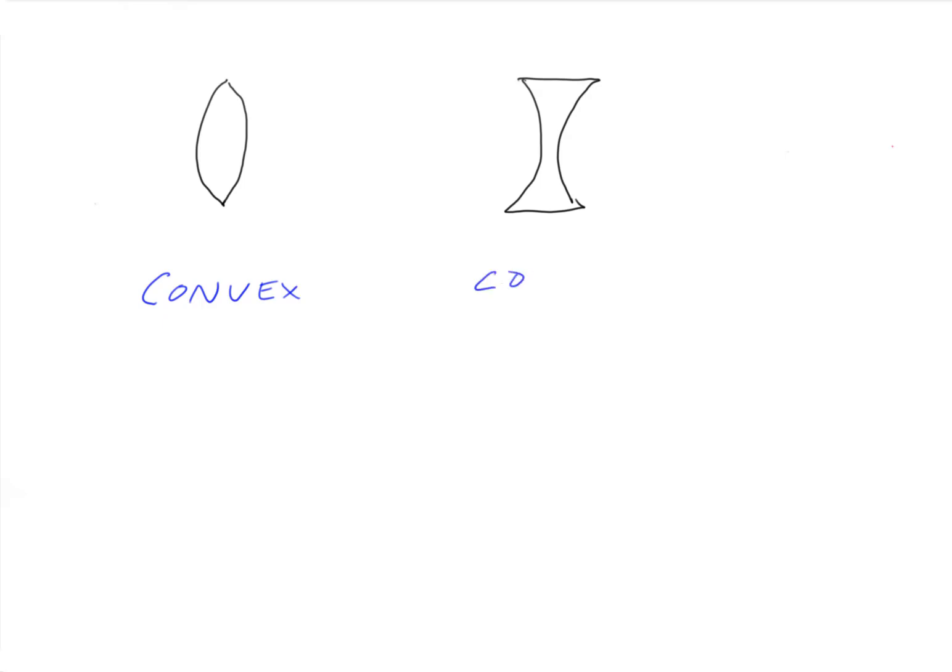And then this lens here is called concave. The mnemonic is the sides are like caves, so that's how you remember that's the concave lens. These are terms that are not really used in the eye clinic, convex and concave.